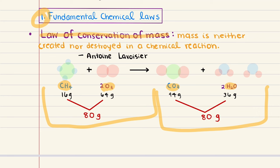To illustrate the law of conservation of mass: one molecule of methane CH4 is 16 grams (carbon 12 plus four hydrogens at 1 each). Two O2 molecules total 64 grams (each O2 is 32 grams). So the total mass of reactants is 80 grams. After the reaction, one CO2 is 44 grams and two H2O molecules are 36 grams, totaling 80 grams. This demonstrates the law of conservation of mass — no mass is lost or gained.